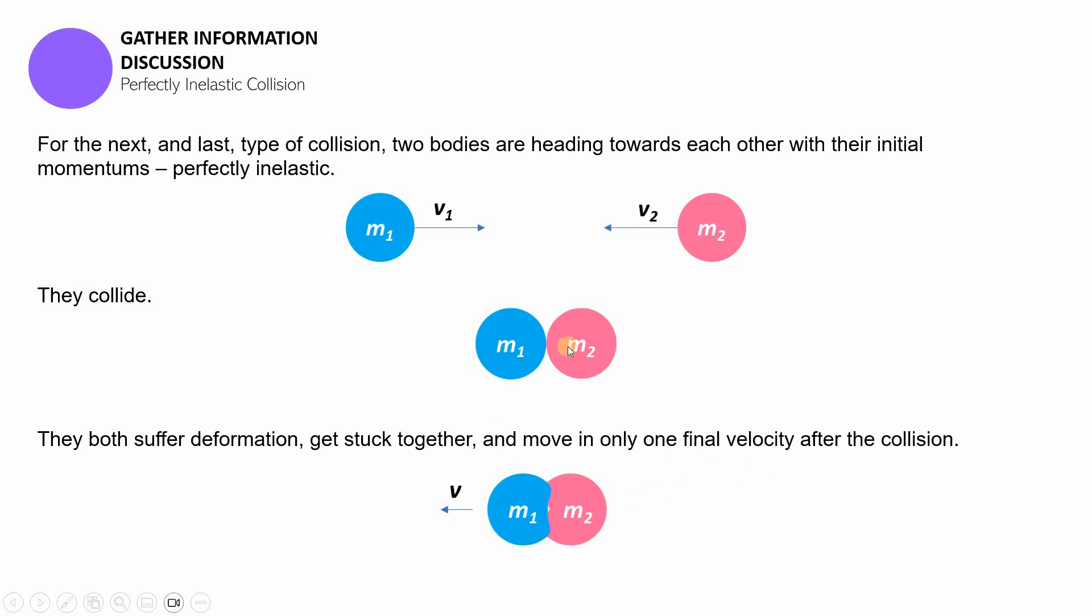So kung halimbawa, let's say dalawang vehicles yan at nagbanggaan sila, ang mangyayari is after ng banggaan magdidikit yung mga bodies nila and then they will be just moving in one direction. They're only moving as one unit kasi nga nag-fuse na sila, nagdikit na sila.